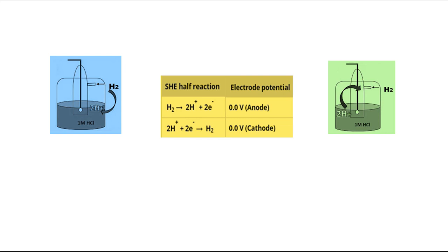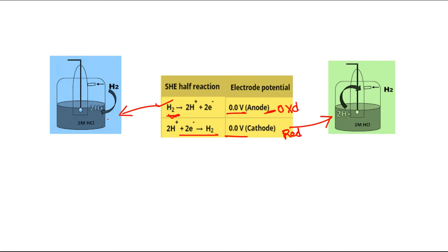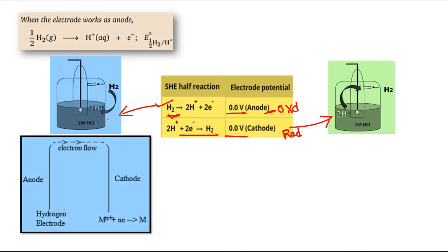The two processes are: H⁺ accepting electrons and being converted to H₂ (reduction), and H₂ releasing electrons and being oxidized to H⁺. In the left-hand side process, H₂ is releasing electrons — that is oxidation. In the right-hand side process, H⁺ is accepting electrons and is reduced to H₂. In both cases the potential is 0.0 volt. As we know, oxidation corresponds to anode and reduction corresponds to cathode.